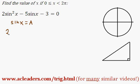And I can rewrite this expression in terms of A. So this would be 2sin²x would be 2A². This guy here would be minus 5A. And the minus 3 just comes down.